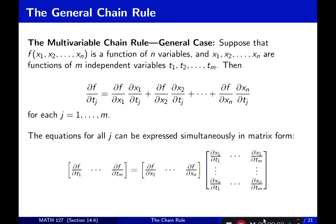The general multivariable chain rule, general case: suppose that f is a function of x1 through xn — a function of n variables — and x1 through xn are functions of m independent variables t1 through tm. Then the partial of f with respect to tj equals the partial of f with respect to x1 times partial of x1 with respect to tj, plus partial of f with respect to x2 times partial of x2 with respect to tj, all the way to partial of f with respect to xn times partial of xn with respect to tj, for each j equal to 1 through m.